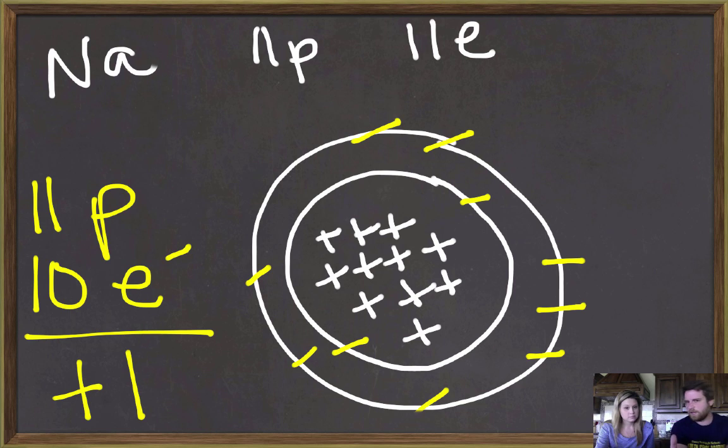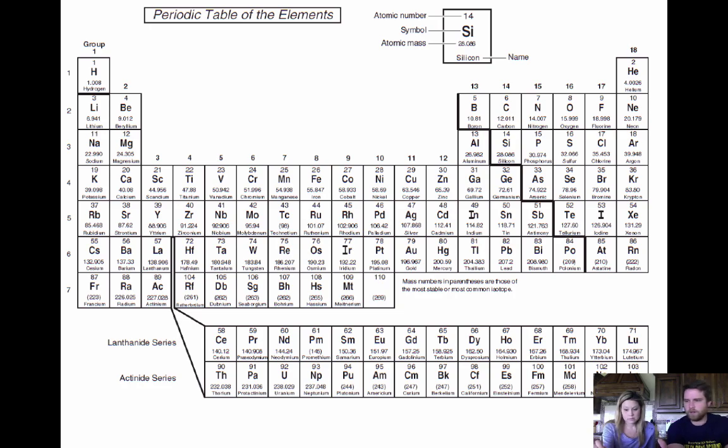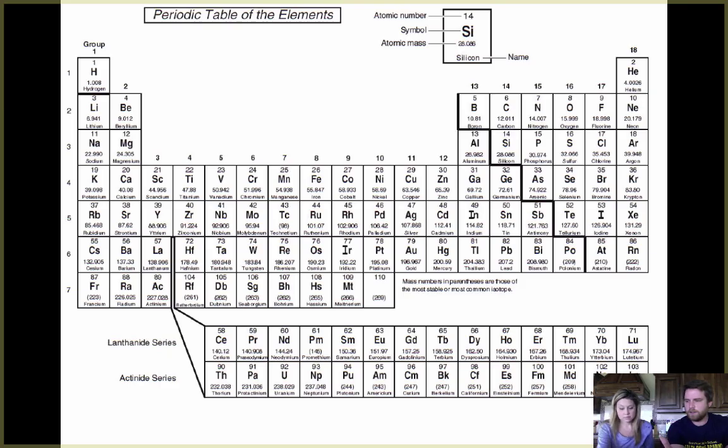We can predict, based on that electron configuration, what oxidation numbers will be. If we look at that periodic table, we said that these guys form plus 1. They have the same number of valence electrons. They all end in S1. So everything that ends in S1 forms a plus 1 oxidation number. Following that pattern, what do we think happens with the alkaline earth metals?